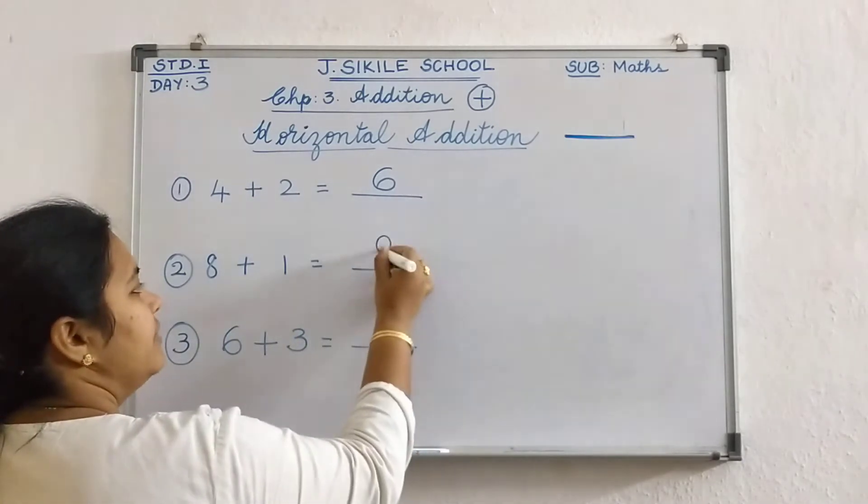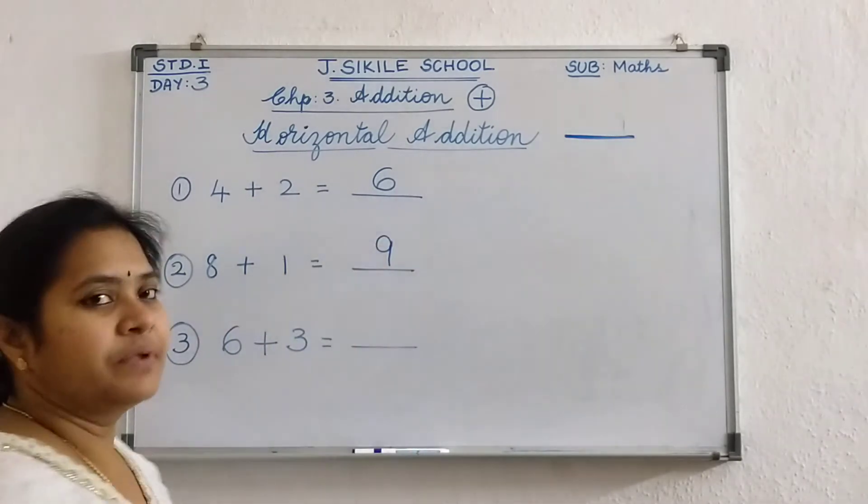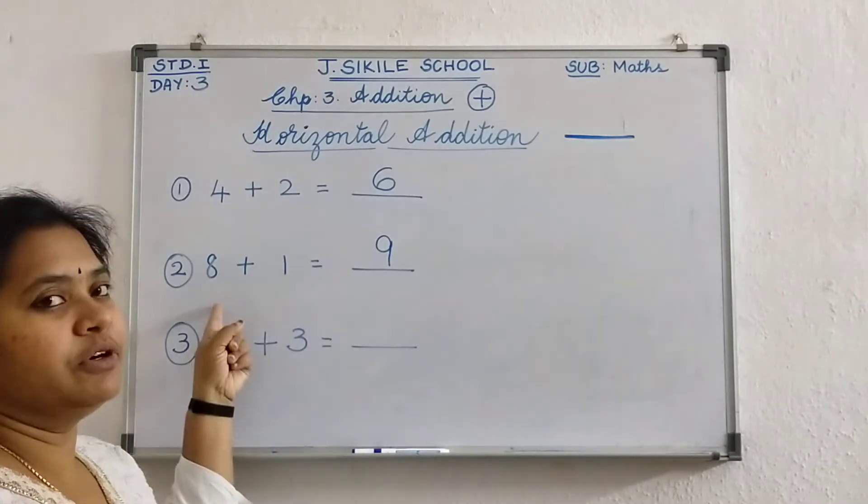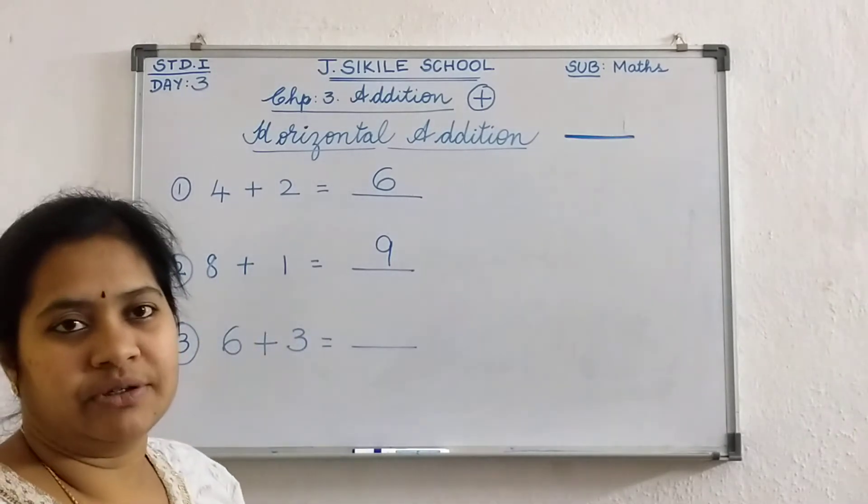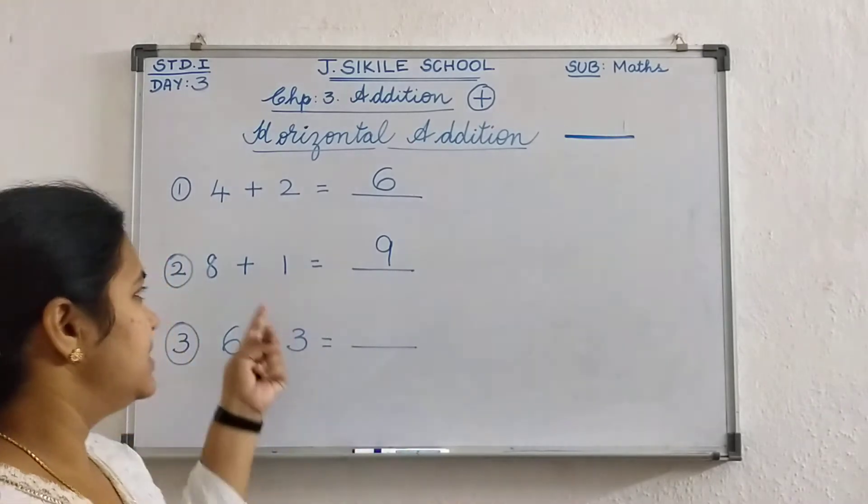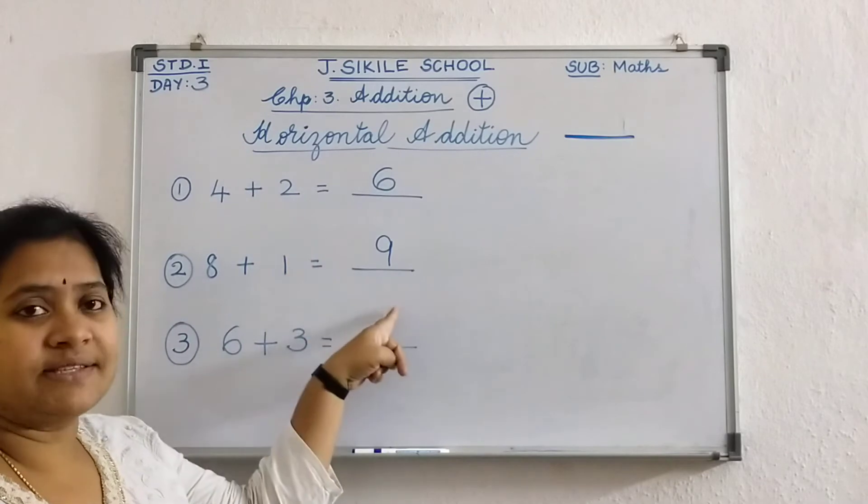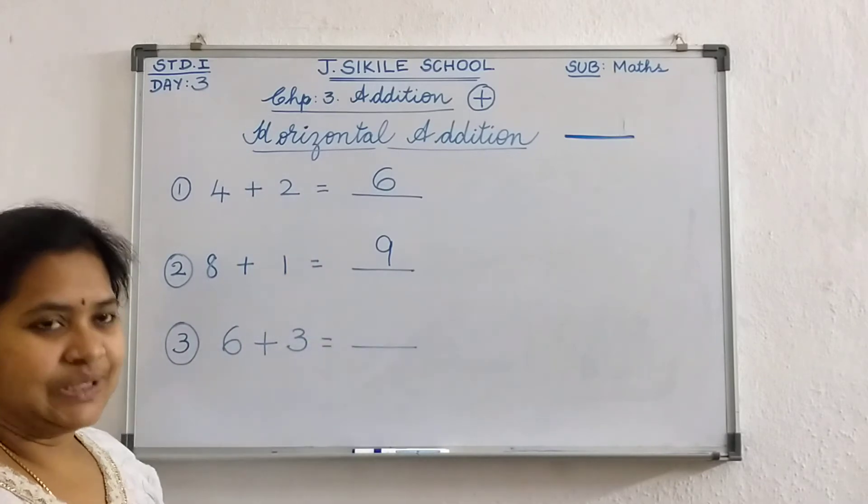So 9 right in the answer line. And I have told you, when we add 1 to any number, we get the next number. Yes or no. Okay.